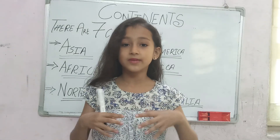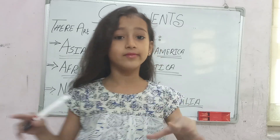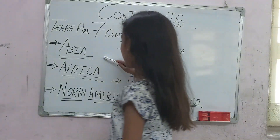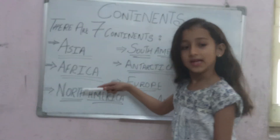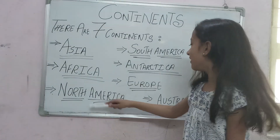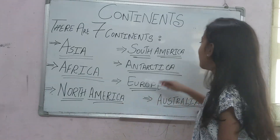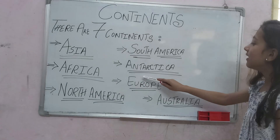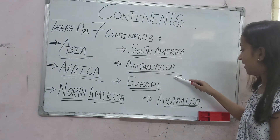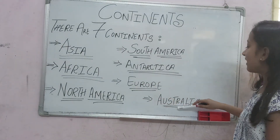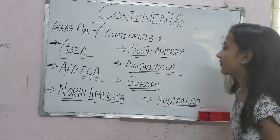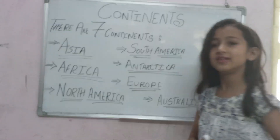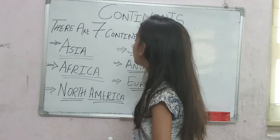Our earth is divided into 7 major landmasses that are: Asia, Africa, North America, South America, Antarctica, Europe, and Australia. Now let us learn something about them.